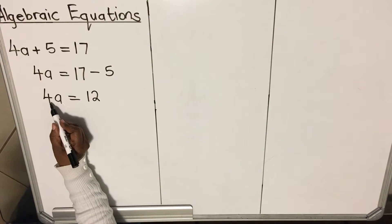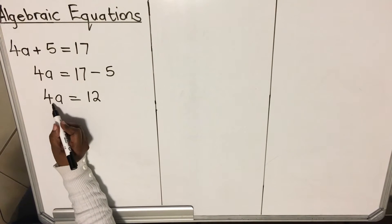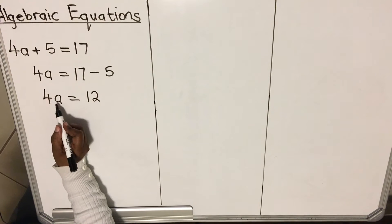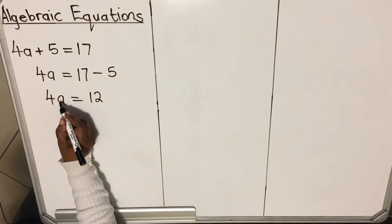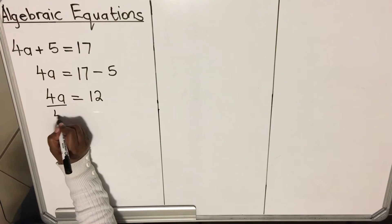If you have a 4 and an a, like this with no sign between them, it means they multiply. So if you have two things that are multiplying and we want to leave the a, we divide by 4.